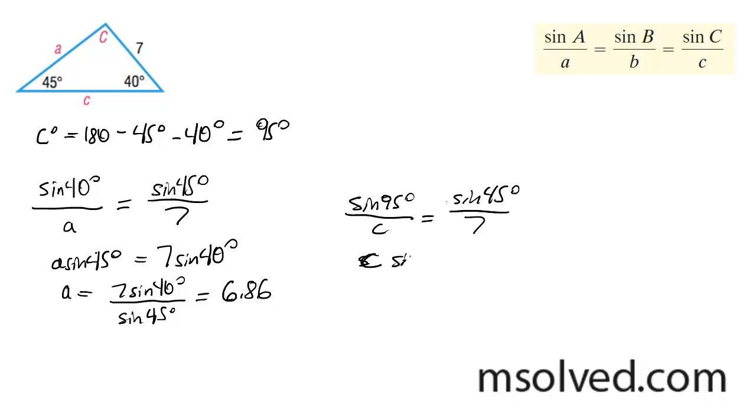Now just do C sine of 45 degrees is equal to 7 sine of 95 degrees. And that rounds to approximately 9.86.